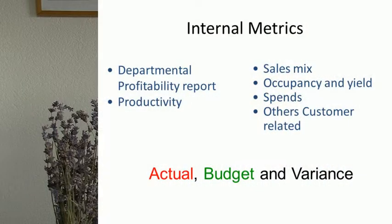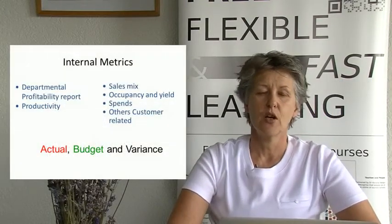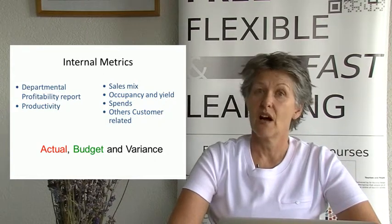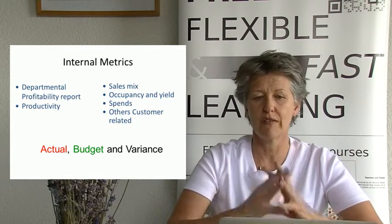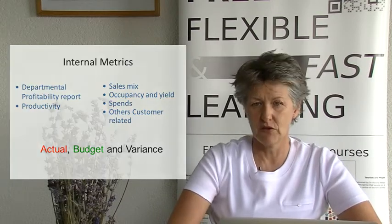We're going to look at internal metrics: departmental profitability reports, sales productivity, sales mix, occupancy, customer spend on ancillary sales, and other customer-related ratios. With internal metrics, we look at what we actually did, compare it to budget, and calculate the variance — the difference between actual and budget. We should also compare ourselves to a similar period in the past: last week, last month, or last year for seasonal periods like Christmas or Easter.